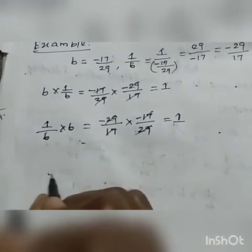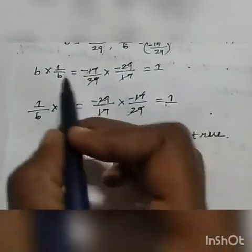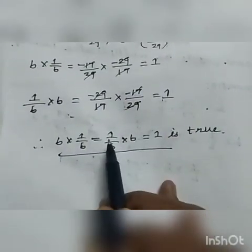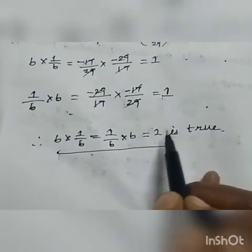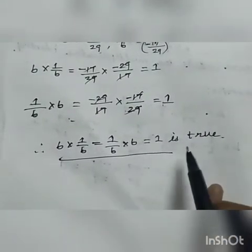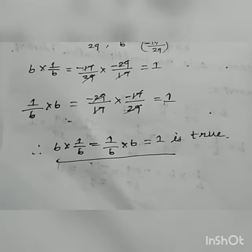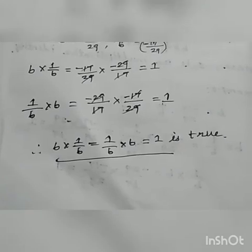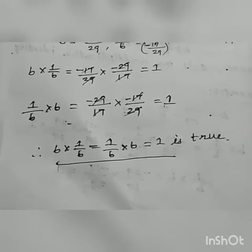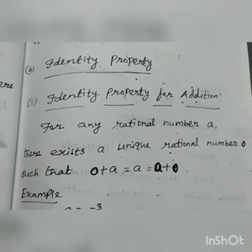Therefore B × (1/B) = (1/B) × B = 1. That is true. So 1 is the multiplicative identity.